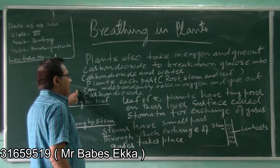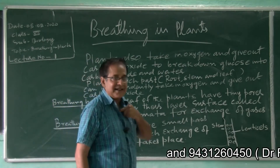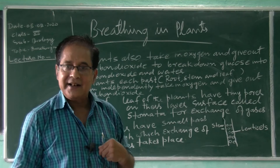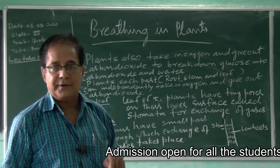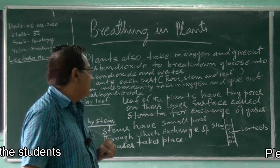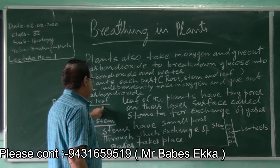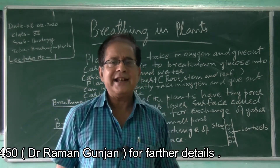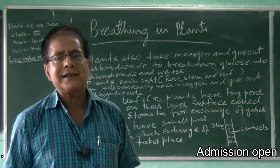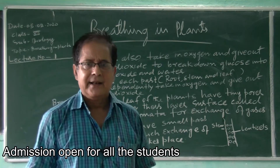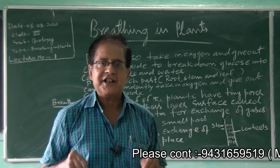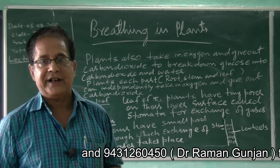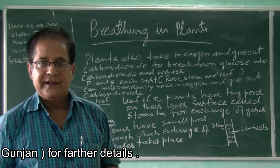During breathing, plants also release, like us, carbon dioxide and water. Oxygen is taken, but carbon dioxide and water vapor is given out. The green leaves take part in photosynthesis. But all plants which are not green, they all respire. Photosynthesis is found only in green plants. But respiration is found in all the plants, in which oxygen is taken and carbon dioxide and water is given out.